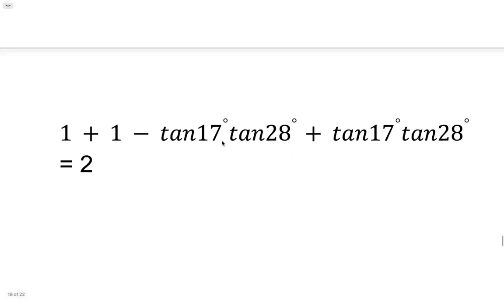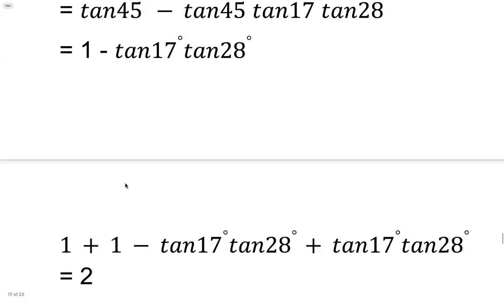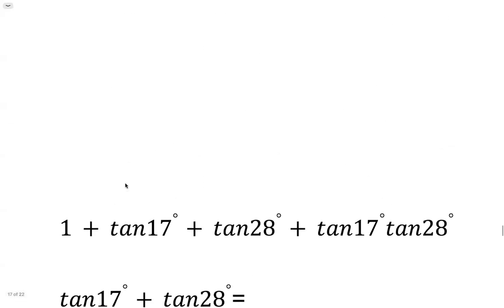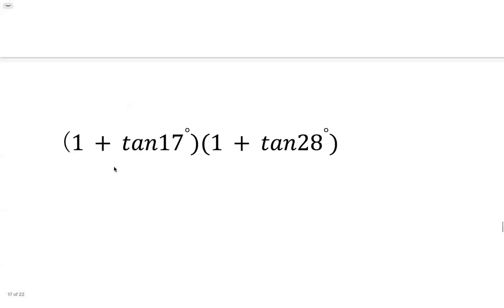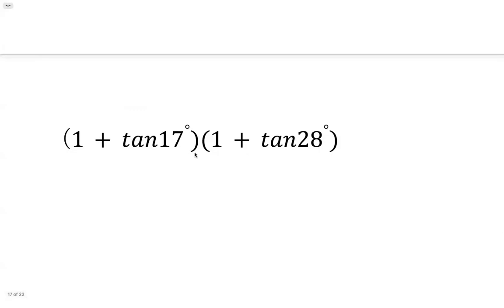We have minus tangent 17 tangent 28, positive tangent 17 tangent 28. So that has to be 0. So in the end, this is simplified to be 2. 1 plus tangent 17 degree times 1 plus tangent 28 degree can be simplified to be 2. Isn't that awesome?